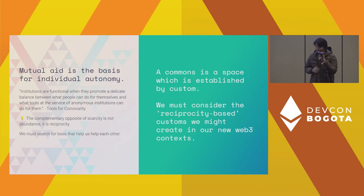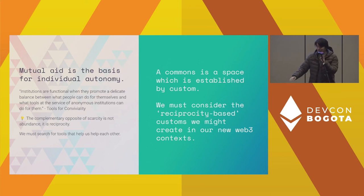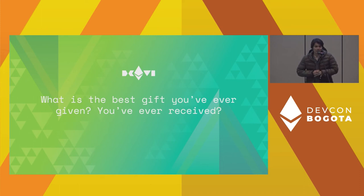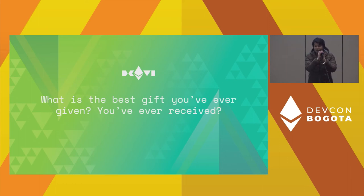We have around 10 to 13 minutes and I want us to do this last Junto. It's about gifts and gifting. A lot of indigenous economies have gift economies where it's not about scarcity but about abundance. Maybe it's worth exploring what that term means to all of us. In your groups, discuss: what is the best gift you've ever given or received? This is our last Junto. Please discuss — we have around 10 minutes.